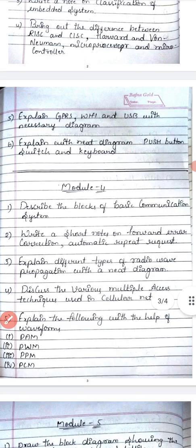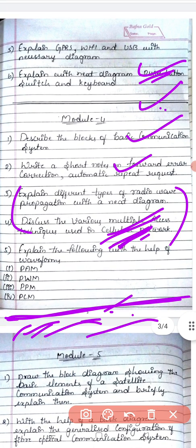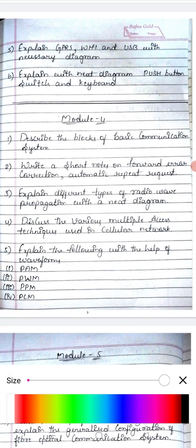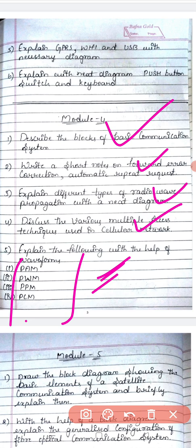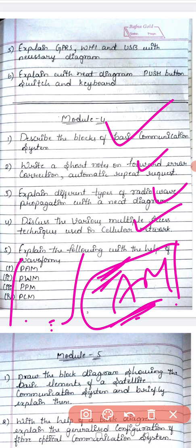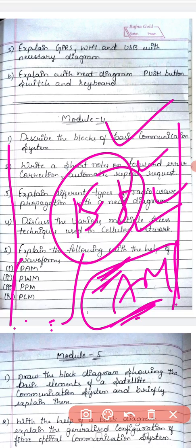Module 4: describe the blocks of a basic communication system block diagram — there is no option, they will definitely give this. Write a short note on forward error correction and automatic repeat request — very important. Explain the different types of radio propagation — very important. Multiple access techniques in cellular networks — very important. They may also ask amplitude modulation, as an analog technique. Probably you will get 15 to 18 marks here.